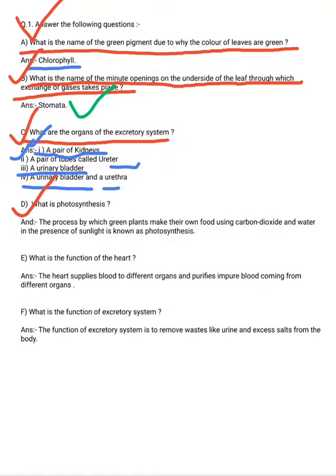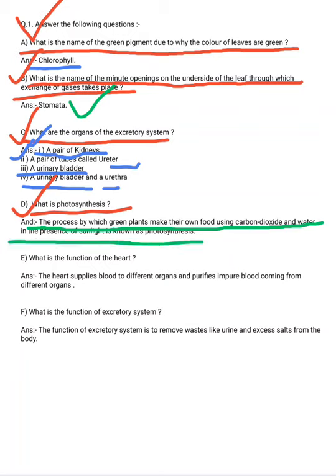Next question: what is photosynthesis? The process by which green plants make their own food using carbon dioxide and water in the presence of sunlight is known as photosynthesis.